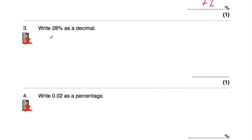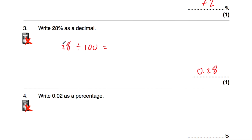Question number three says write 28% as a decimal. You might just be able to spot this and write it as 0.28. Alternatively, you could take the 28 and divide it by 100, so we're moving the digits two columns to the right. The 2 in the tens column moves into the units and then into the tenths. The 8 moves from the units into the tenths and then into the hundredths, so the answer is 0.28.